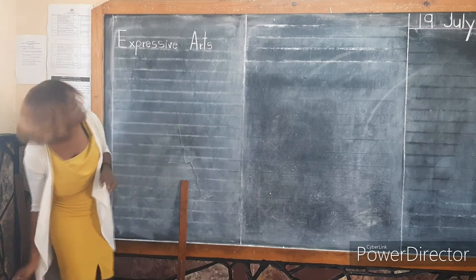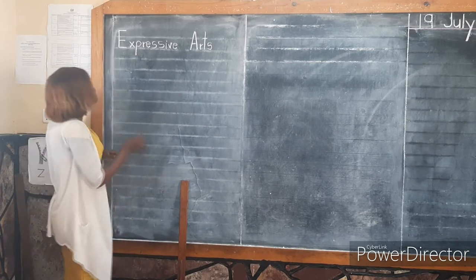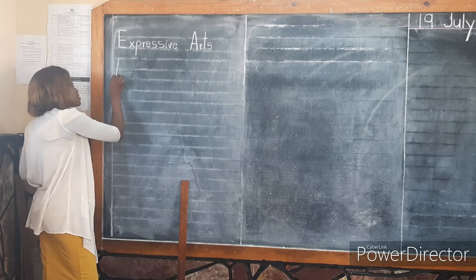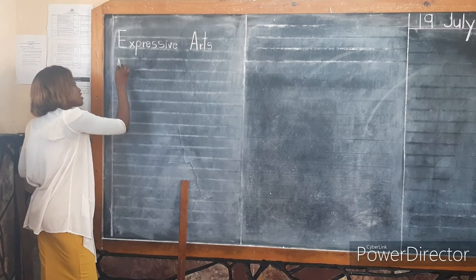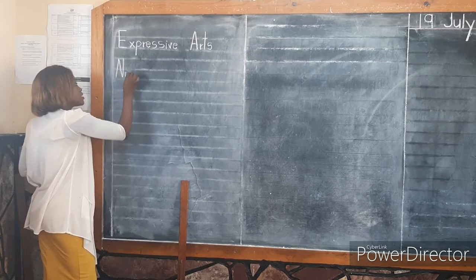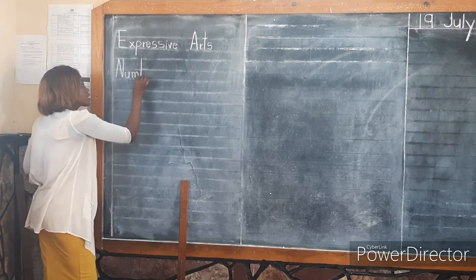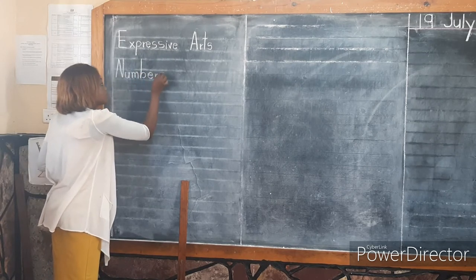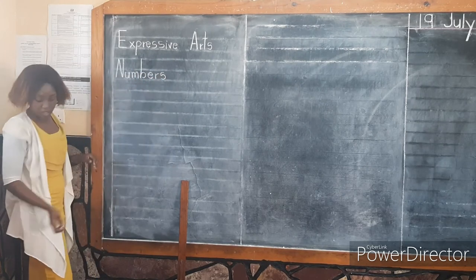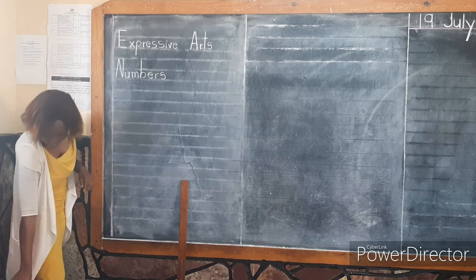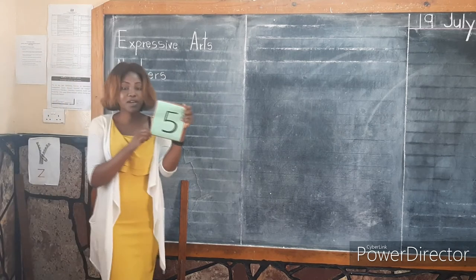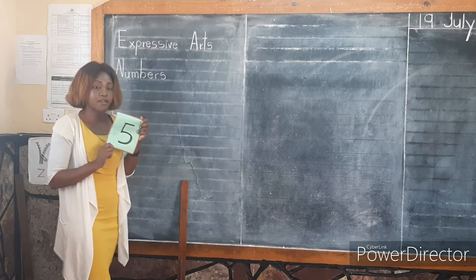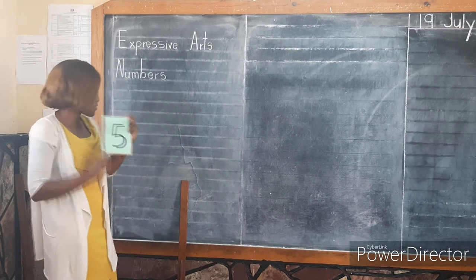We are going to demonstrate how we write number 5. We are going to say, because we are looking at numbers, and our number is this one here. The first number that we have is number 5. We are going to write number 5. How do we write this number 5?